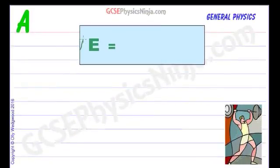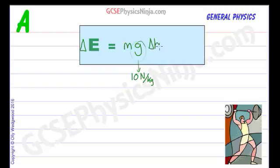So the change in gravitational potential energy is the mass multiplied by the gravitational field strength of the planet that you're on. And on Earth, that is usually taken as being 10 newtons for every kilogram, multiplied by the change in height. And there's that delta sign again, the change in height.